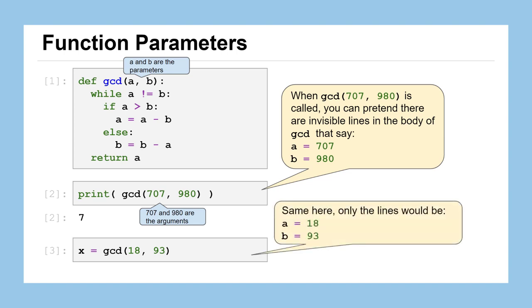Basically, A equals 707 and B equals 980 are kind of these invisible lines of code that get run whenever you call your function with those values as the arguments. We can see here on the second cell of code down below the definition that it's the same idea here. When we call GCD 18, 93, there's basically some invisible lines of code that make sure that A is assigned the value of 18 and B is assigned the value of 93 when you call that command.